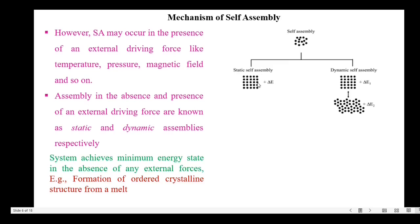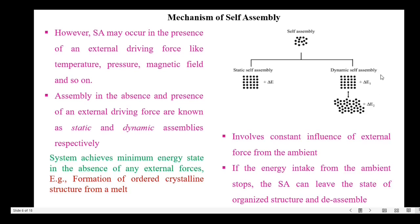In static assembly, the system achieves a minimum energy state in the absence of any external forces — for example, formation of ordered crystalline structure from a melt. In the dynamic self-assembly process, it involves a constant influence of external force from the ambient. If the energy intake from the ambient stops, then the self-assembly can leave the state of organized structure and de-assemble.